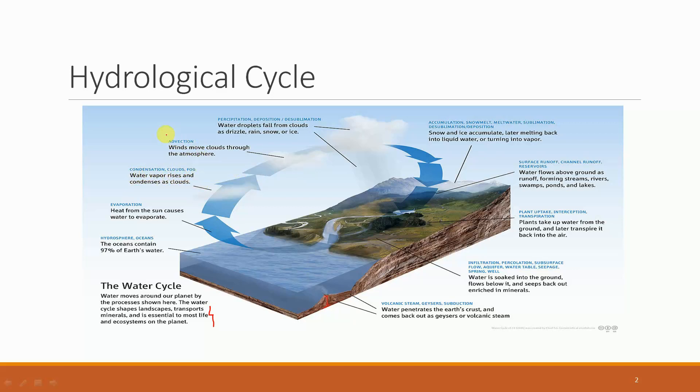Next is something called advection. This is the movement of winds which results in movement of clouds and further precipitation. This results in the water coming back to the earth surface either in the form of a drizzle or rain or snow or ice.